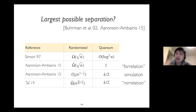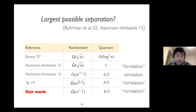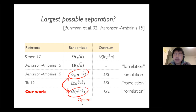In recent years, Tal generalized the forrelation problem, referring to this generalization as the row relation problem, a family of Boolean functions defined with respect to a parameter k. He showed the relation problem can be solved by quantum algorithms using k/2 queries, but any randomized algorithm would require n to the (2k−2)/(3k−1) queries. In our work, we give a tight analysis and show that the randomized query complexity is in fact n to the 1 minus 1/k — which, in view of the Aaronson-Ambainis simulation result, is an optimal lower bound and the best separation one can get.